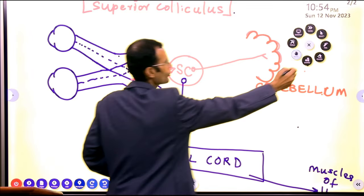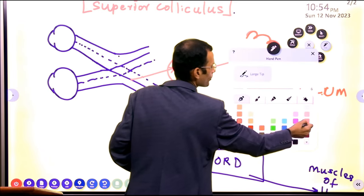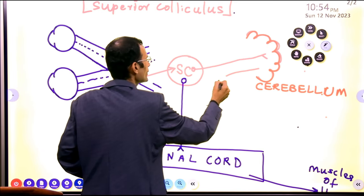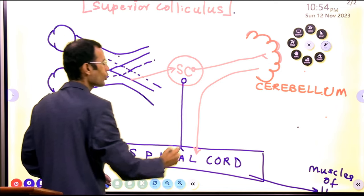Now, based on this visual input, cerebellum will send this output signals, which will go to the spinal cord.